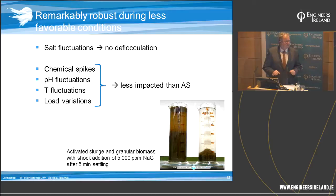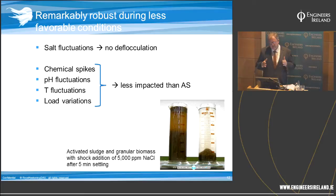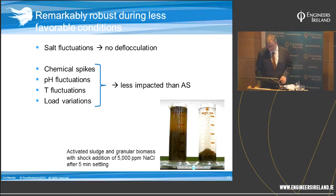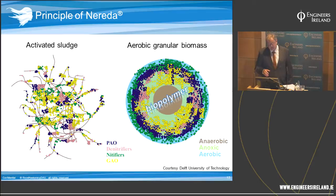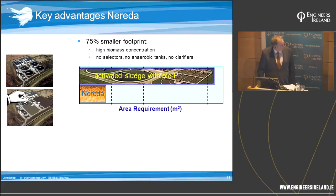The granular sludge responds remarkably robustly to less favourable conditions — shocks in salt concentration, very high or low pH, or chemical and toxic spikes. We know this because in a few cases we ran conventional activated sludge systems in parallel to a Nereda reactor. The robustness is thought to work because on the activated sludge floc organisms are exposed, whereas in the granular sludge the organisms build a polymer house for themselves — the biopolymer matrix — which protects them against shocks from toxics or pH changes.